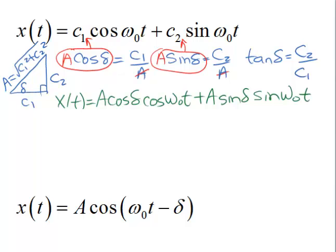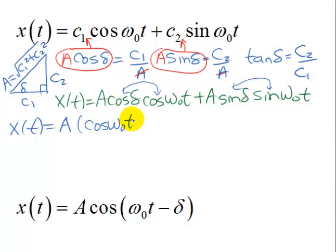Now I'm going to do a couple of things in this next step. I'm going to factor out the A that's in common and also commute these two functions. They're just multiplied so I can turn them around. So X of t equals the A factored out in front, with cosine omega naught t cosine delta plus sine omega naught t sine delta.